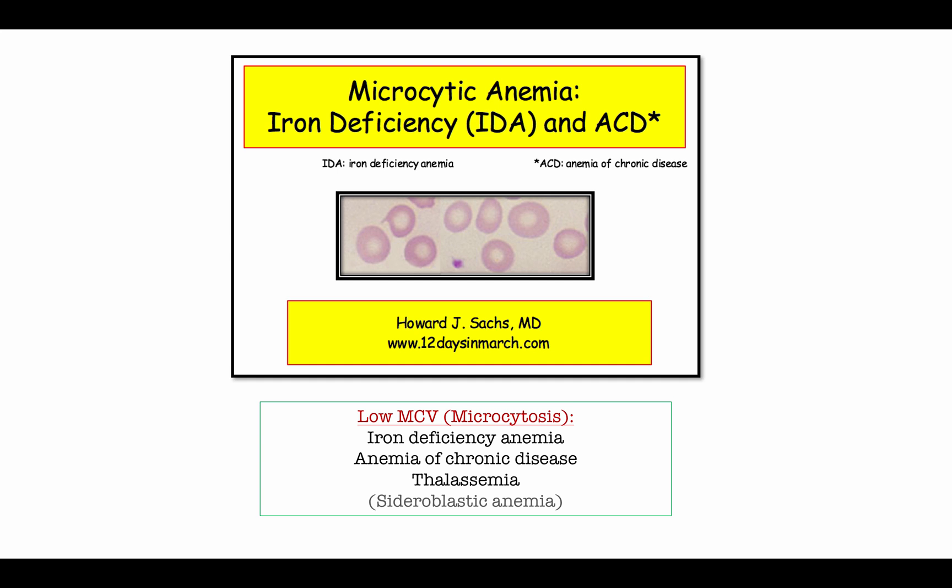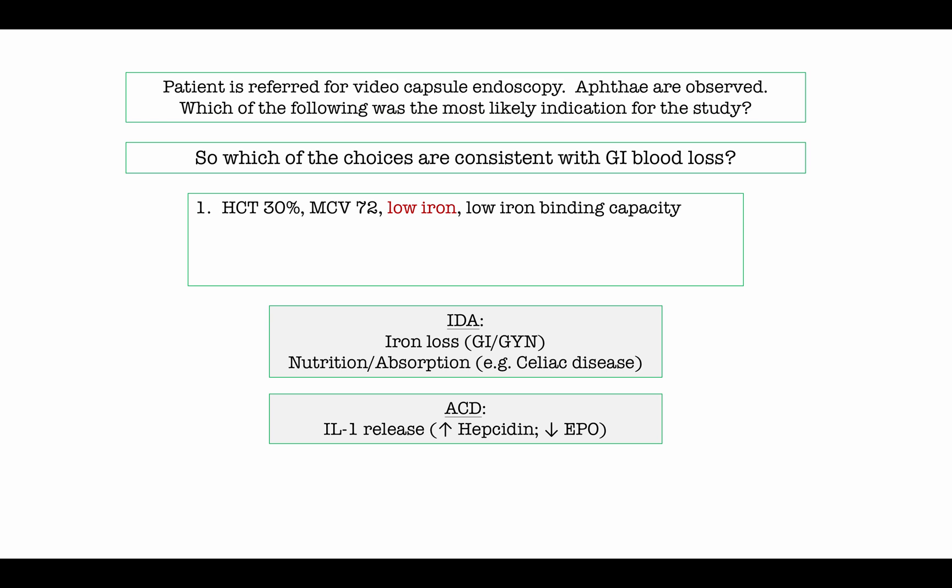Returning to the discussion: the patient has a low iron. This can be seen in iron deficiency anemia or anemia of chronic disease. In iron deficiency anemia, the low iron is typically from loss of iron to the outside world, as seen in GI or GYN bleeding. On the boards, it would be unusual to see iron deficiency from poor nutrition. They do use iron deficiency to underscore malabsorption, with celiac disease being a classic example.